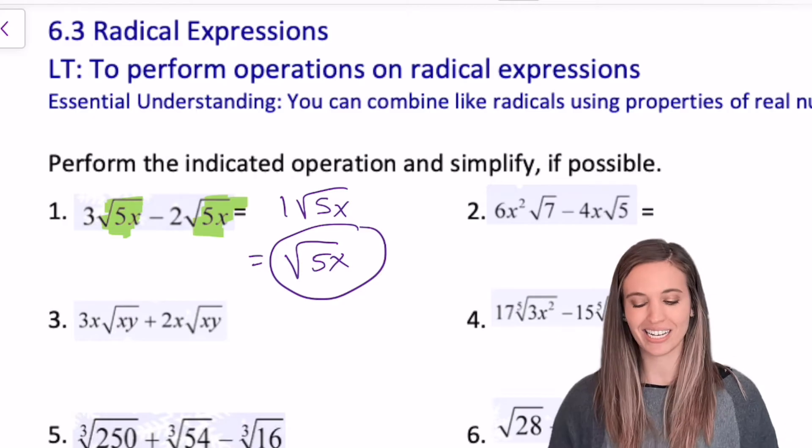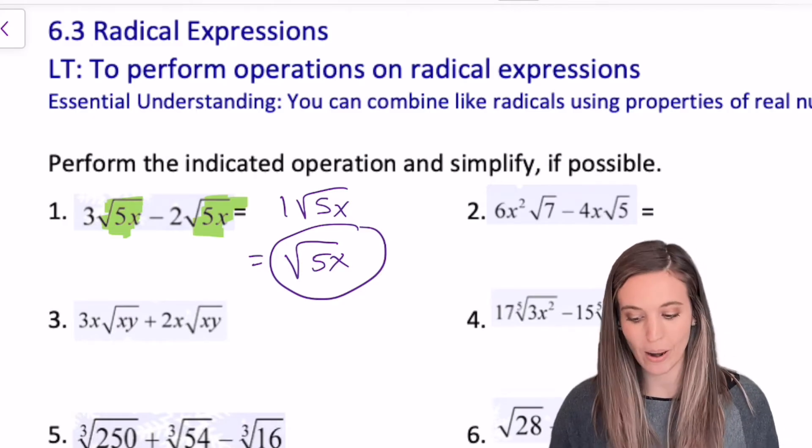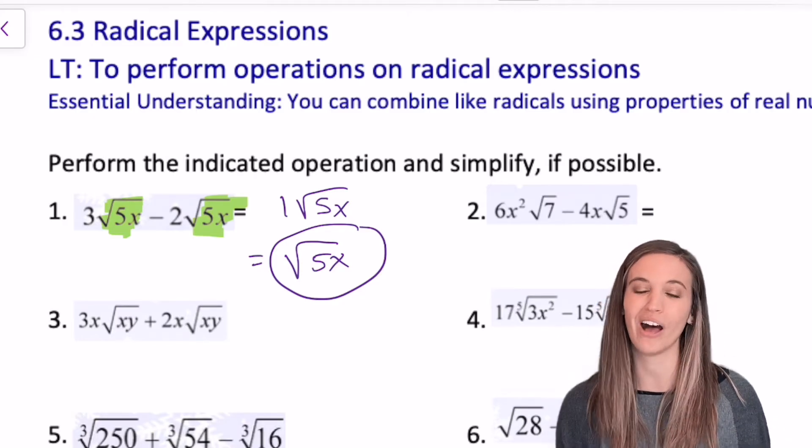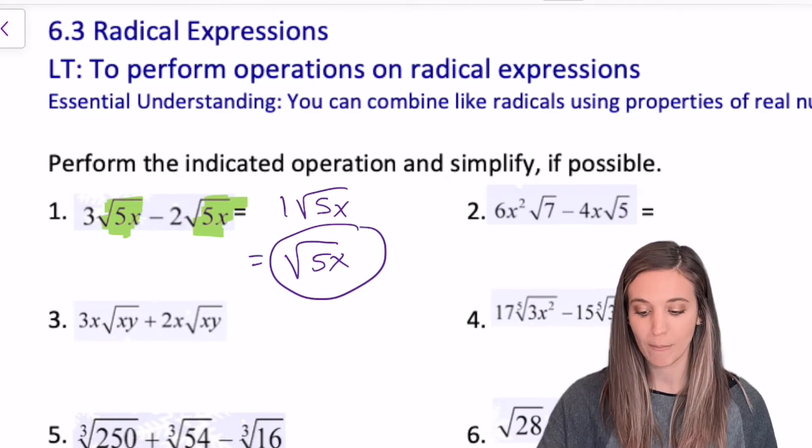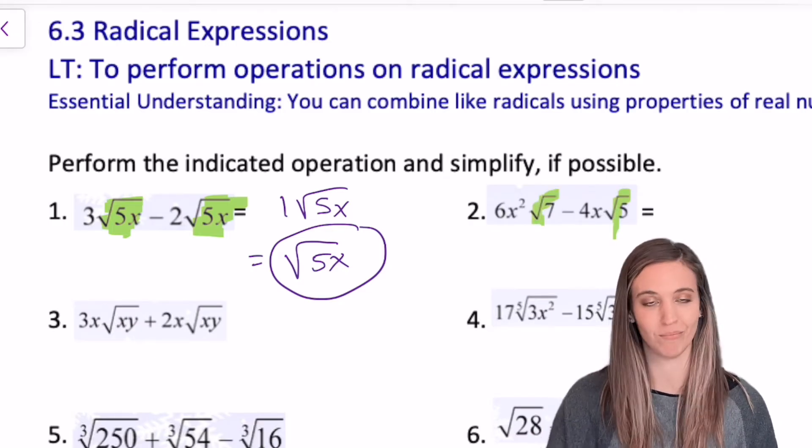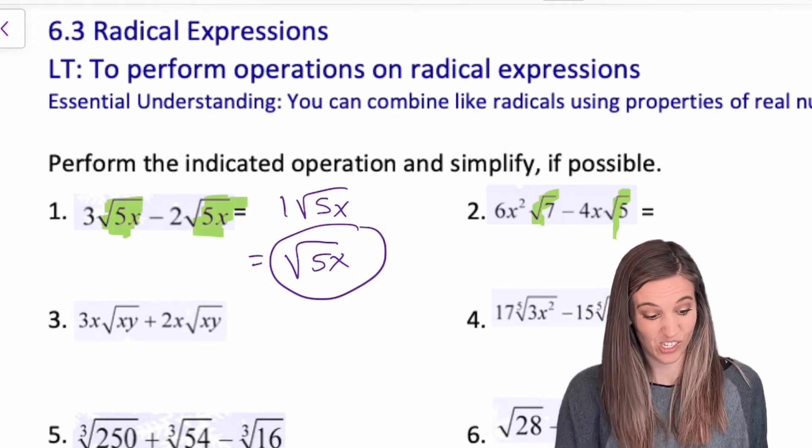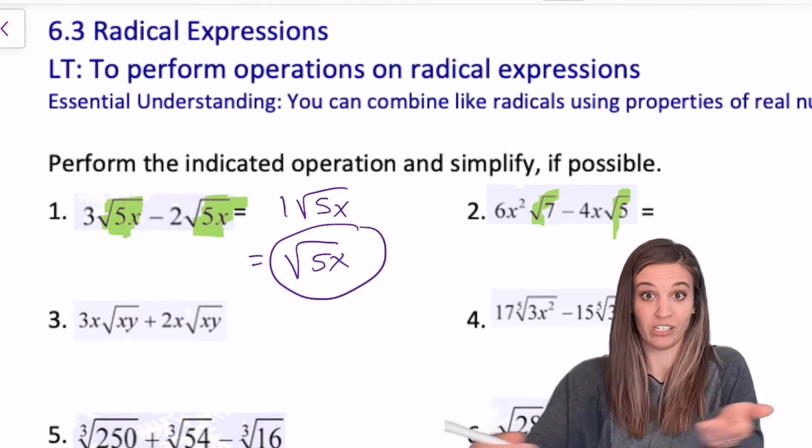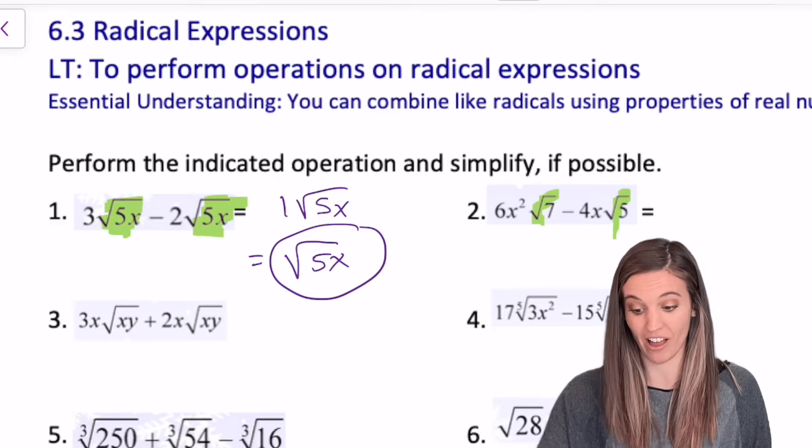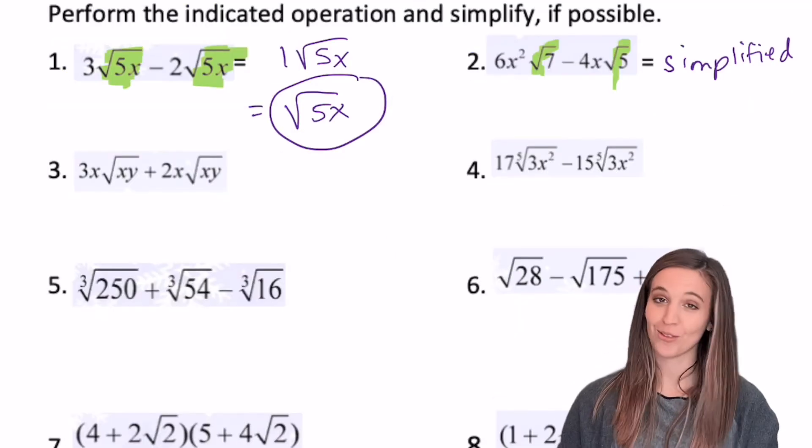Let's try that again on this next one. 6x squared root 7 minus 4x root 5. Darn it, my radicals aren't the same. So there's not much I can do here. There's nothing else to simplify. So this one, it just is what it is. So it doesn't simplify. I'm just going to say it's simplified.